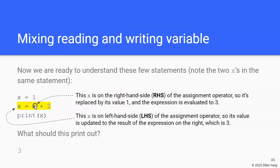And when it sees the x, because x is not on the left-hand side of the operator, then x is on the RHS or the right-hand side of the assignment operator, so it is replaced by its value, which is 1 at this point. So Python is evaluating 1 plus 2, which gives us 3.